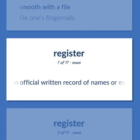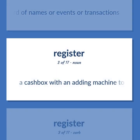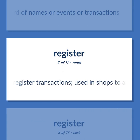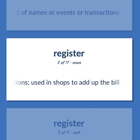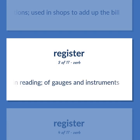Register: an official written record of names or events or transactions. A cashbox with an adding machine to register transactions, used in shops to add up the bill. Indicate a certain reading of gauges and instruments.